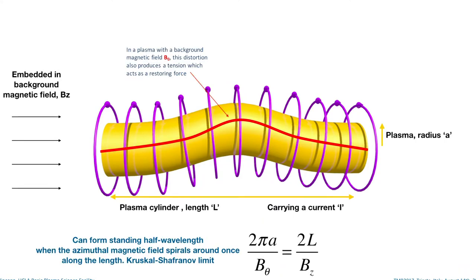The criterion for this becoming kink unstable is suppose this perturbation can propagate down to some boundaries. The lowest mode you can have would be a half wavelength. Does the magnetic field spiral around once by the time it gets all the way down the cylinder? This leads to the Kruskal-Shafranov limit, which I'll show you where we satisfy this and where we don't in the experiment later.